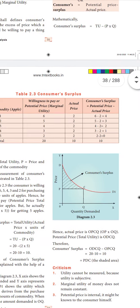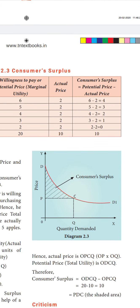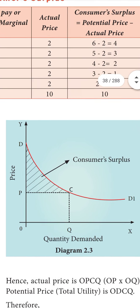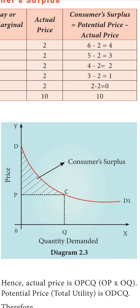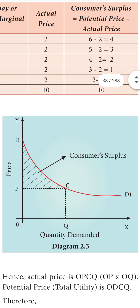Coming to the diagram. On the diagram, the X-axis measures quantity demanded and the Y-axis measures price. You want to purchase 5 apples, so on the X-axis you mark 5 units quantity demanded.